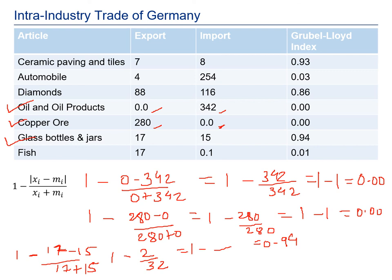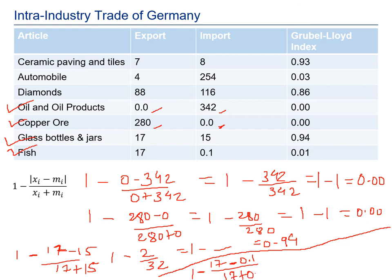For the seafood industry: exports are 17 and imports are 0.1. Applying the formula: 1 − |17 − 0.1| / (17 + 0.1) = 1 − 16.9/17.1. Performing the calculation gives an answer of 0.01, which is near 0 since Germany is almost entirely exporting and barely importing in seafood. This completes the Grubel-Lloyd Index calculation for all industries.